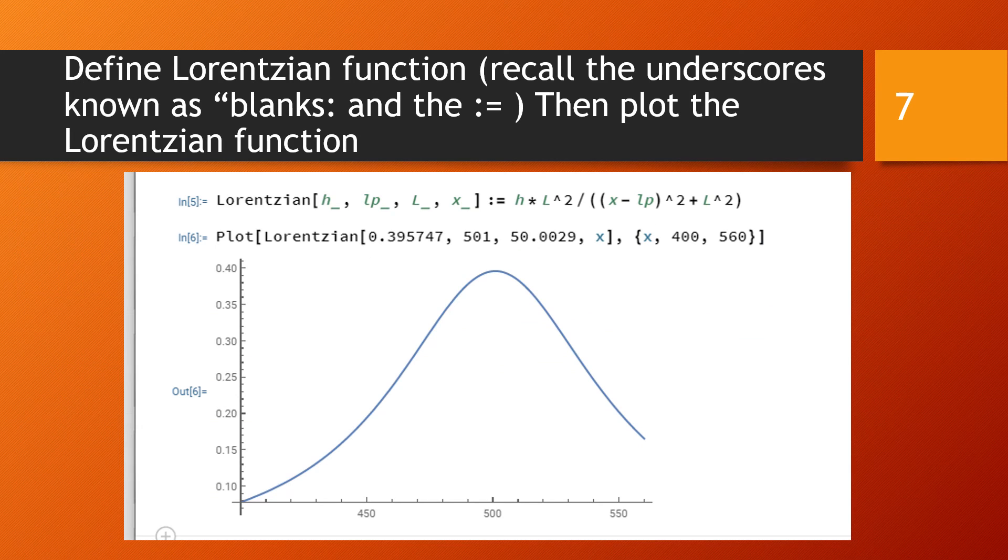Next we will define the Lorentzian function, recall the underscores known as blanks and the colon equal, and then we're going to plot the Lorentzian function over the same ranges of x's as the data, so from 400 to 560.